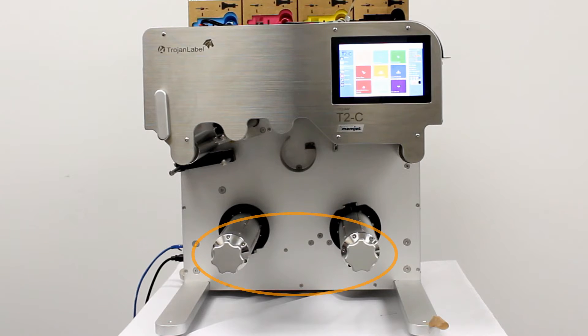To load material, make sure the mandrels are loosened. Set the collars on the mandrels to be 57 millimeters from the back wall of the printer. Make sure the nip roller is open.